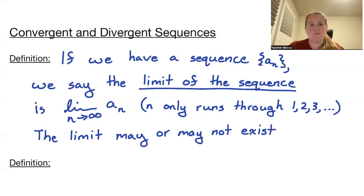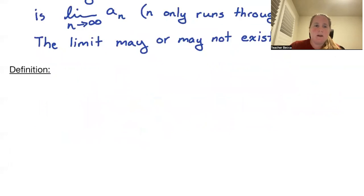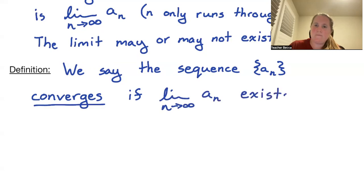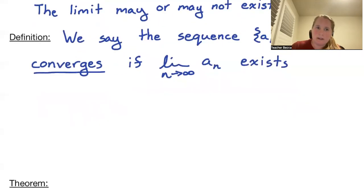Just like limits of functions may or may not exist. Another definition: we say that the sequence a_n converges if the limit of a_n exists. Otherwise, we say it diverges.